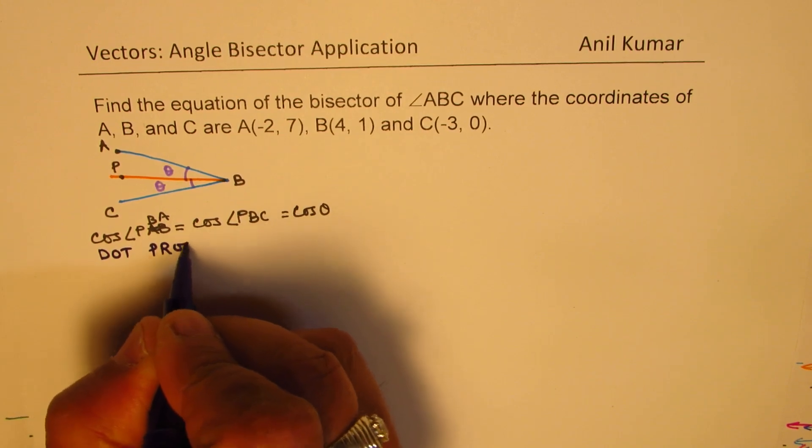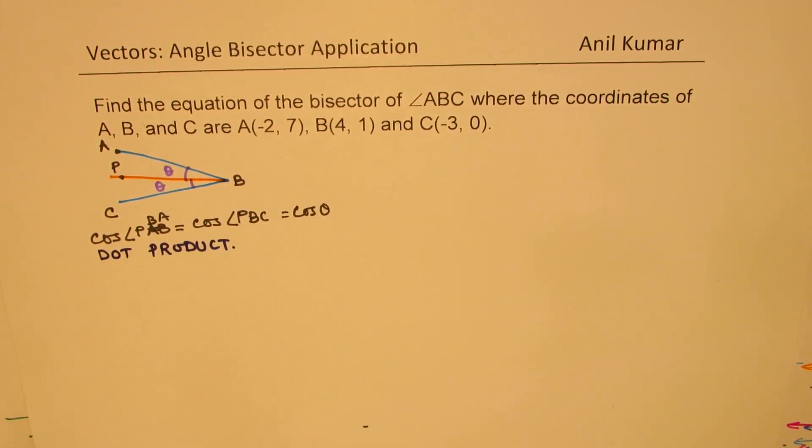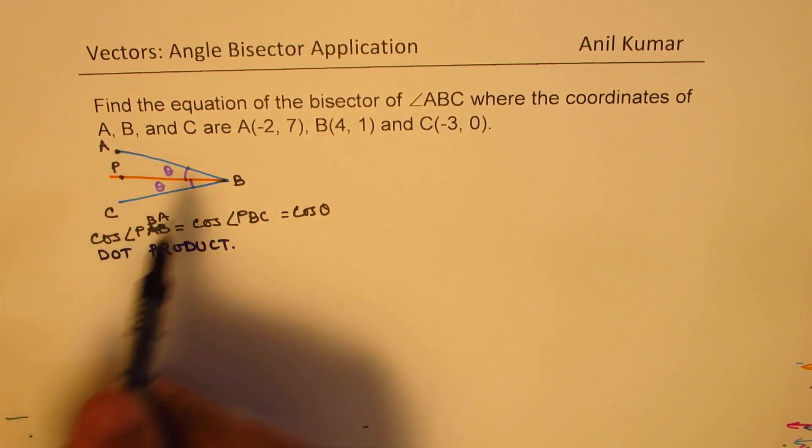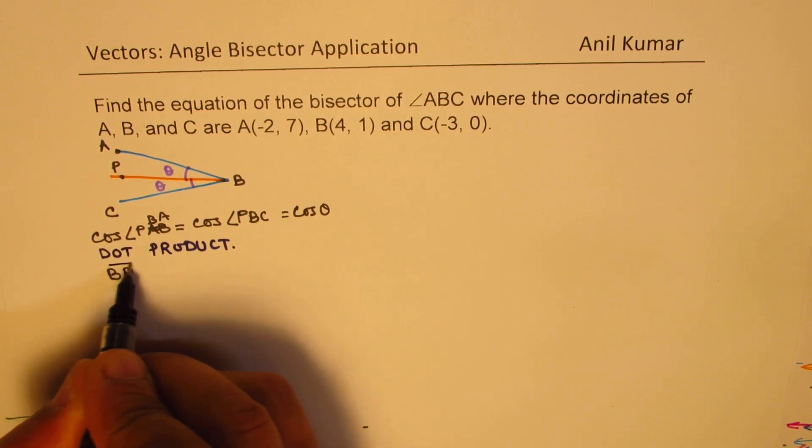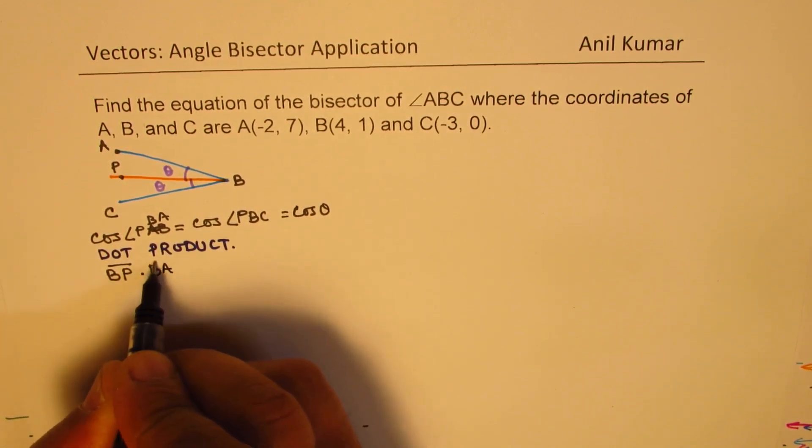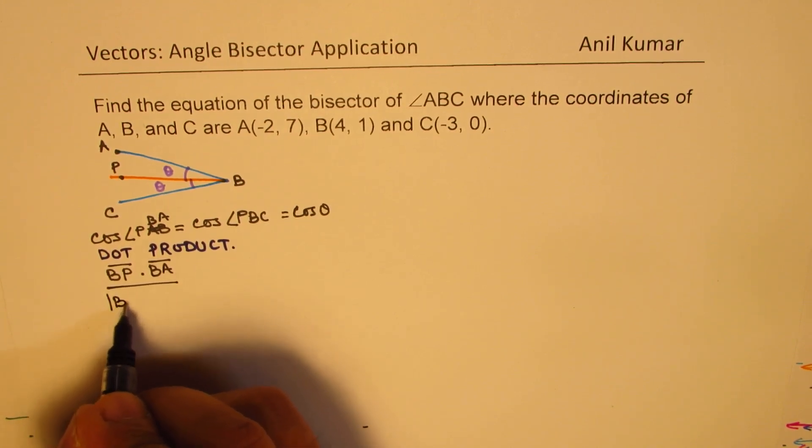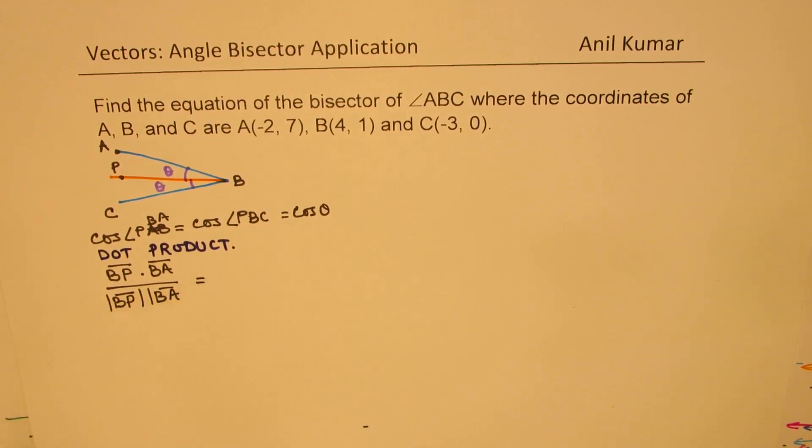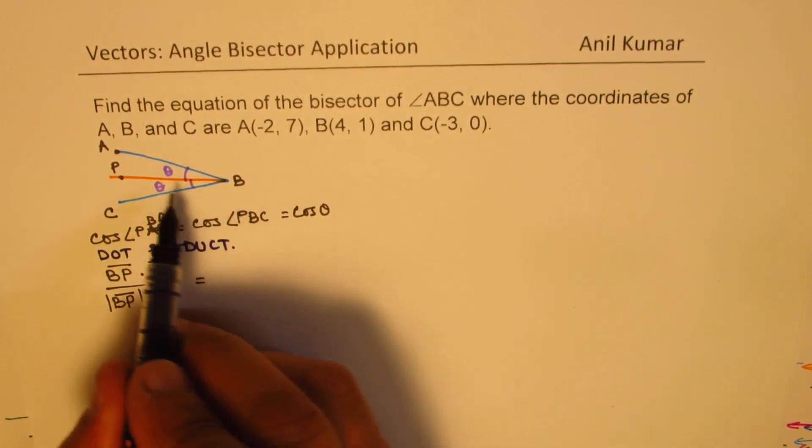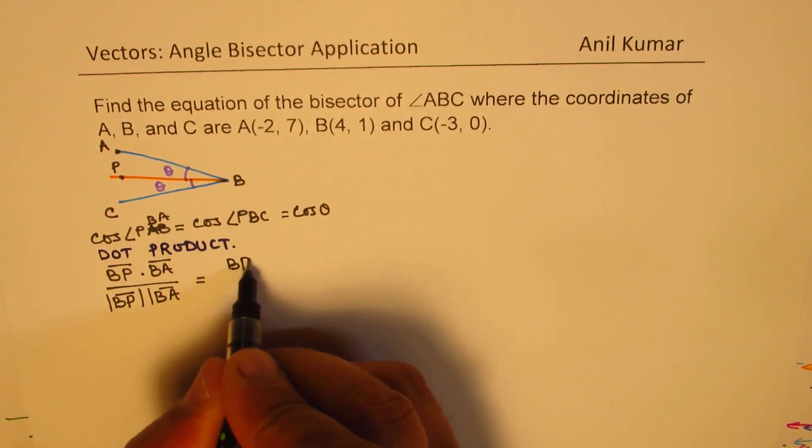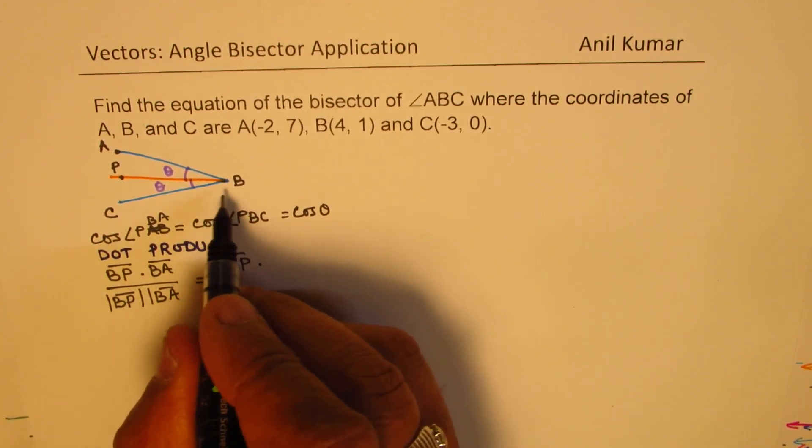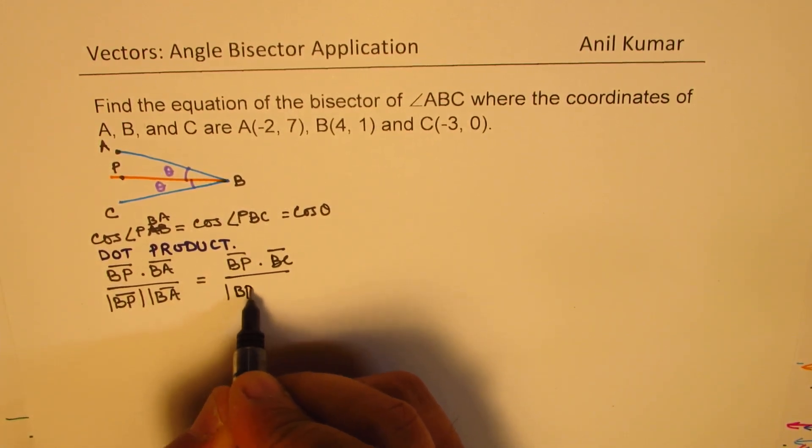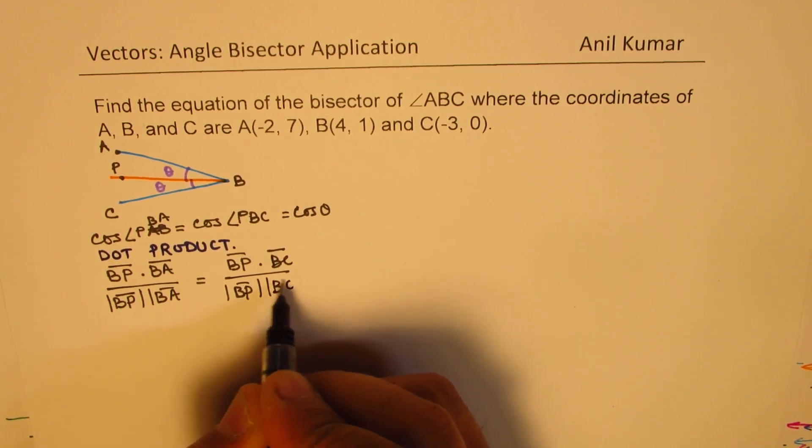So, what we can do here is that cos of angle PBA will be BP dot BA over magnitude of BP times magnitude of BA. That should be equal to cos of the other angle, that means BP dot BC over magnitude of BP times magnitude of BC.